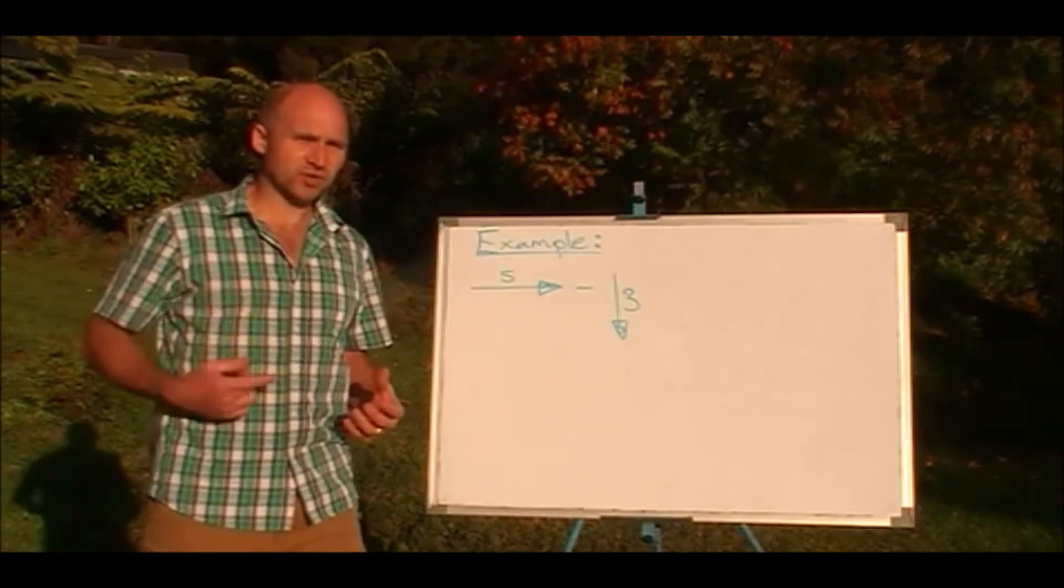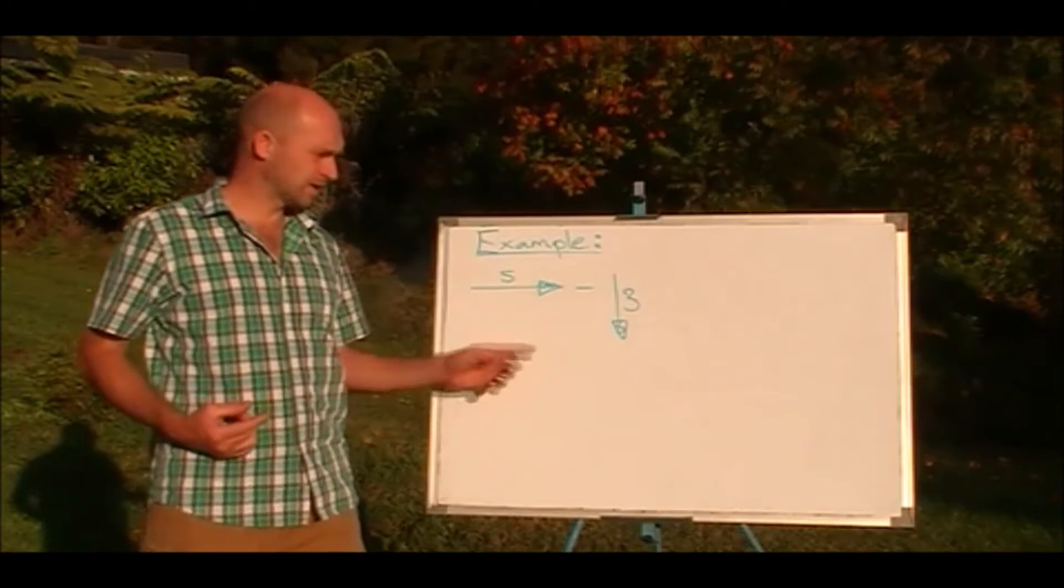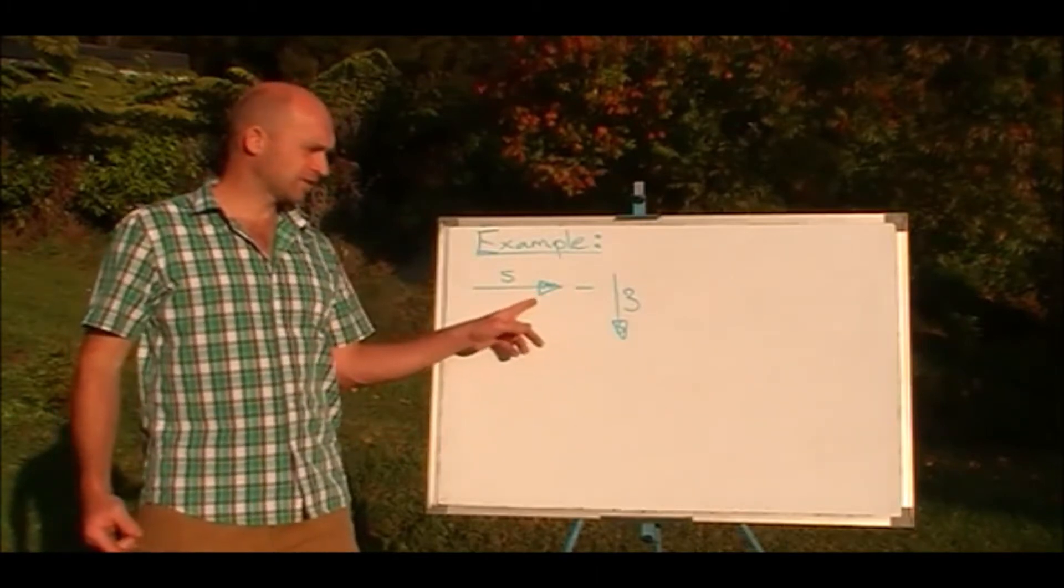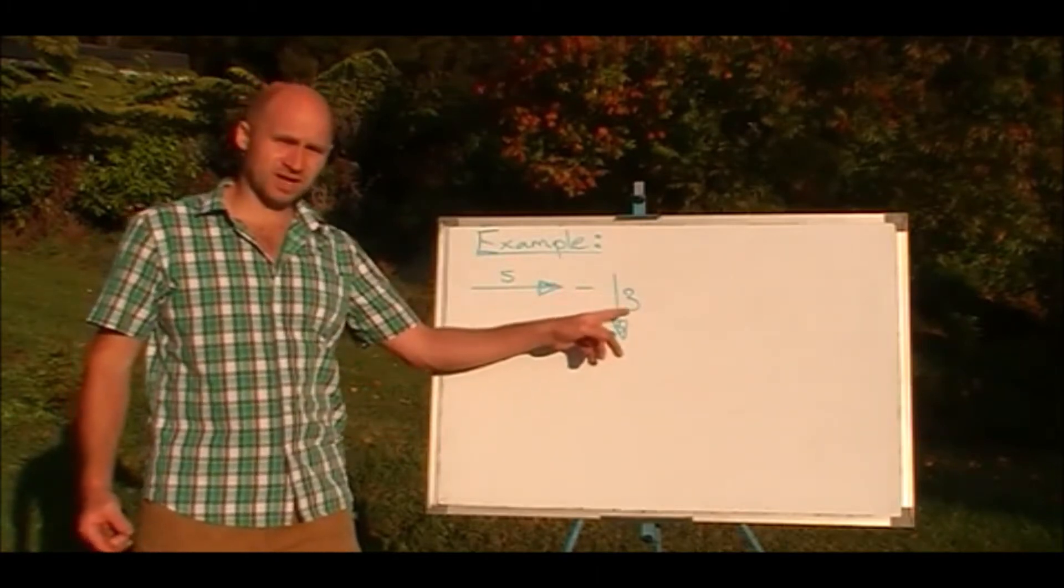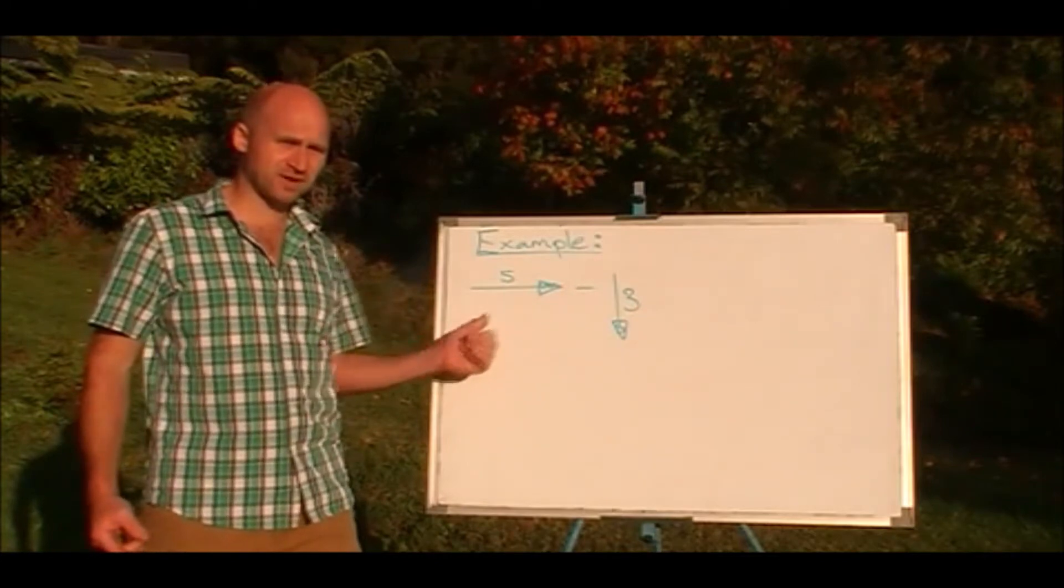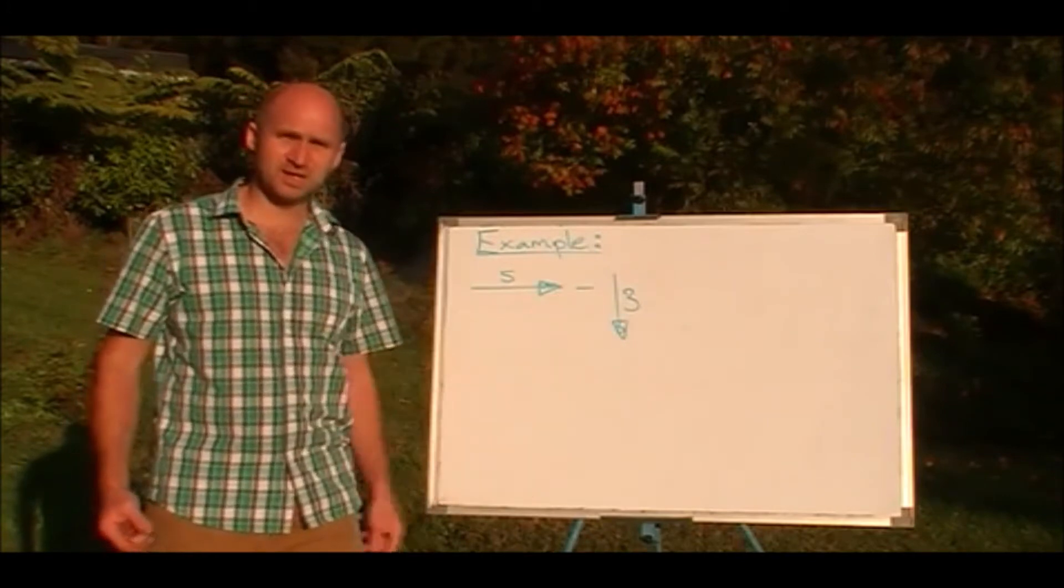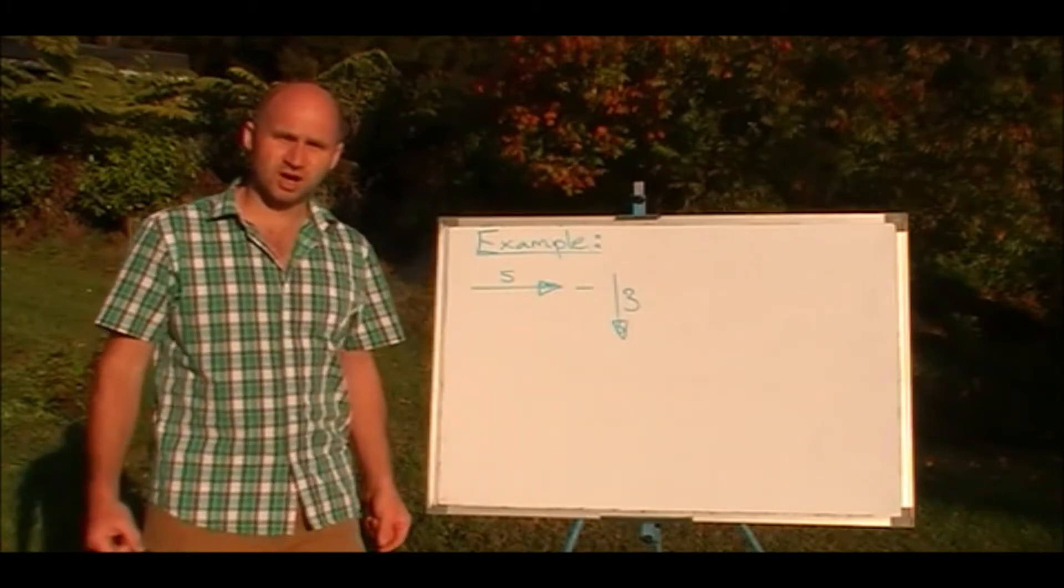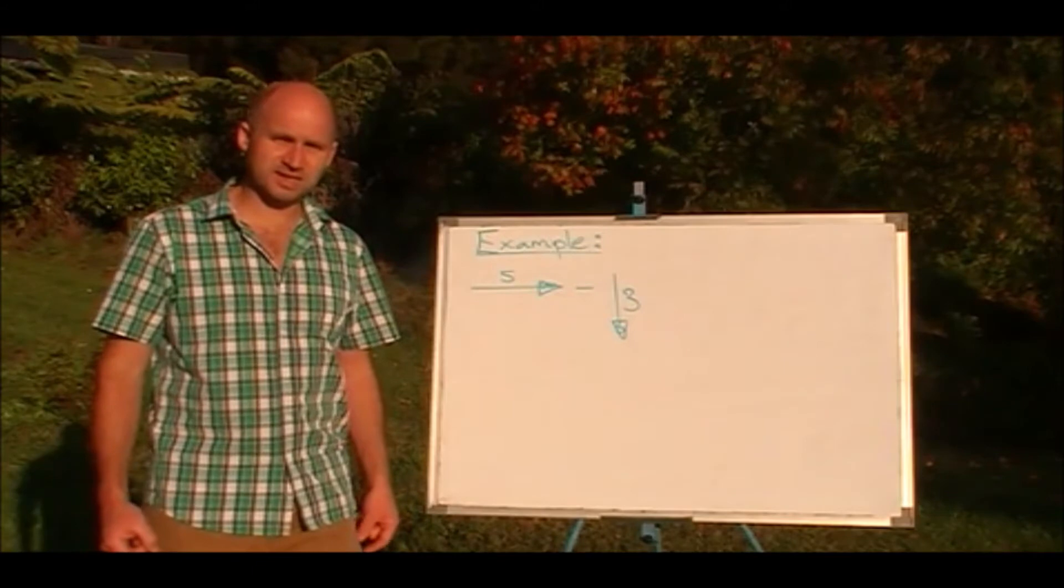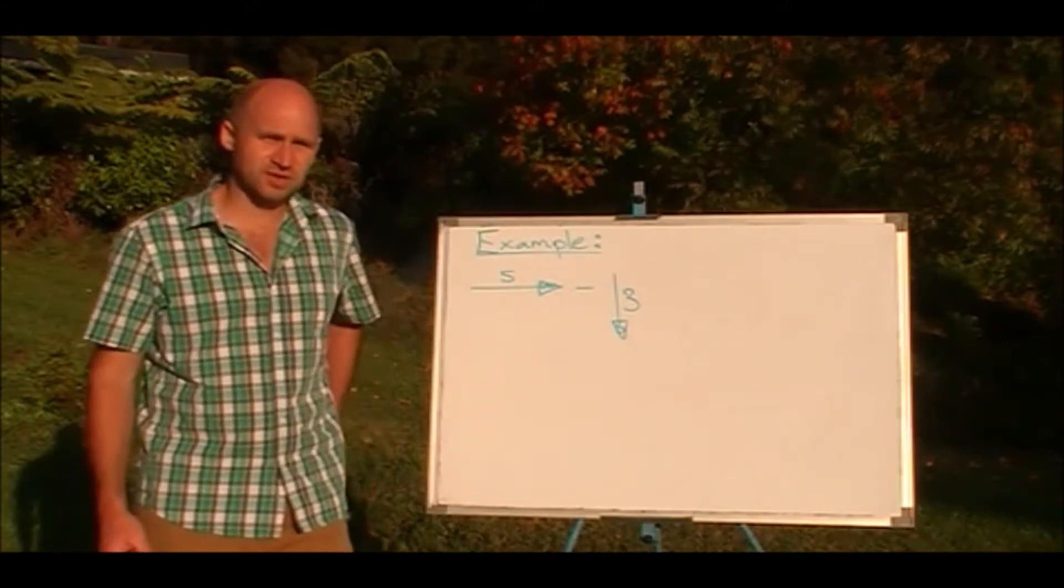And it's really important that we get the right one: 5 plus negative 3. It's not negative 5 plus 3. It's 5 plus negative 3. So we're going to reverse the direction of the vector that's subtracted. That's the 3. That's the first step.